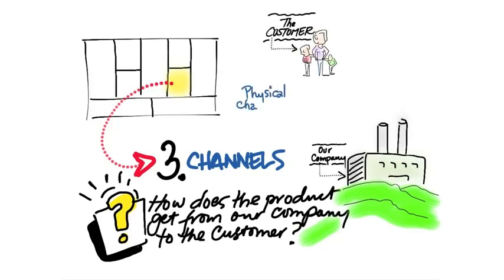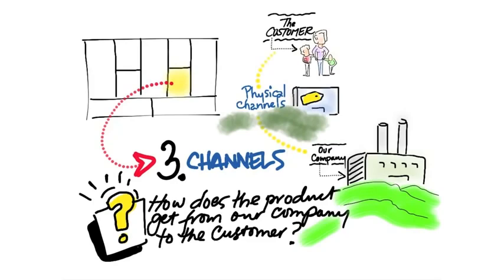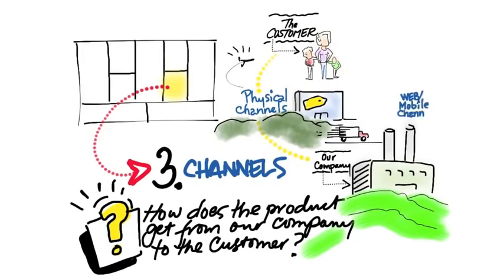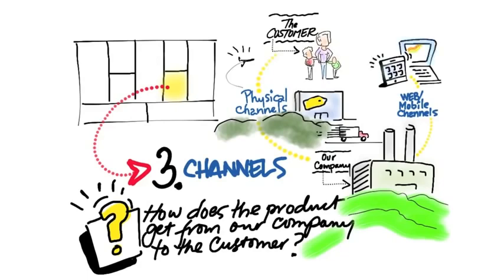But since the mid-1990s, in the last couple of decades, we now have virtual channels: the web, mobile, cloud. And so with distribution channels, the first question you want to ask is: how will I be selling and how will I be distributing my products? Are they through physical channels or are they web and mobile?